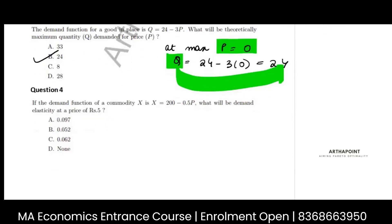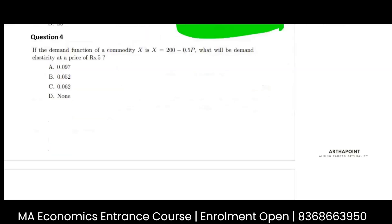Let's go to the next question. I hope you've done these, just keep checking. If the demand function of a commodity is X equals 200 minus 0.5P, what will be the demand elasticity at price of 5?